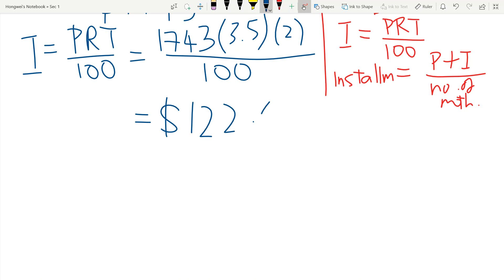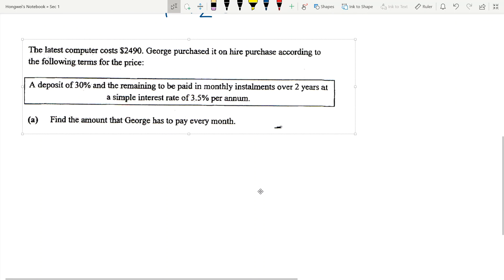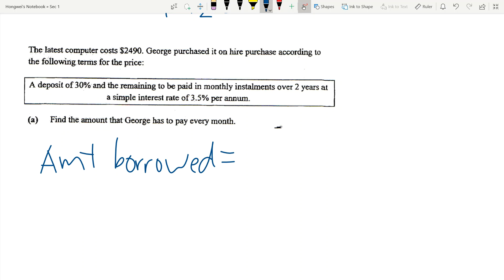$122.01. Now remember, this is only the interest. A common mistake that students do is they forgot that whatever amount you borrow, you need to pay back to the bank as well. So this is the total amount borrowed: equals $1,743 plus $122.01, which will give you $1,865.01.